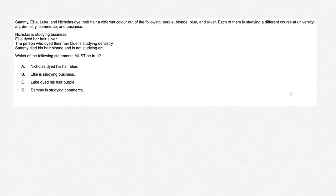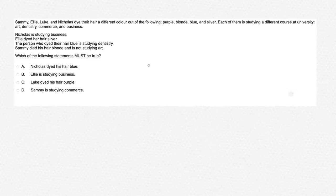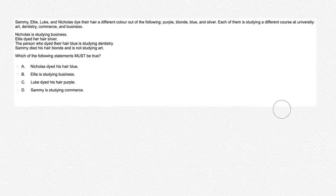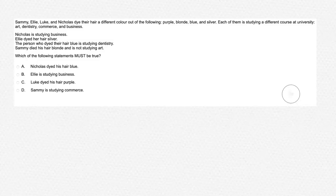Now let's try a different style of question. Sammy, Ellie, Luke and Nicholas dyed their hair a different colour: purple, blonde, blue and silver. Each of them is studying a different course at university: art, dentistry, commerce and business. Nicholas is studying business. Ellie dyed her hair silver. The person who dyed their hair blue is studying dentistry. Sammy dyed his hair blonde and is not studying art. Which of the following statements must be true? For these types of questions, we must draw up 2 tables — one comparing people with hair colour, and one comparing people with their university course.